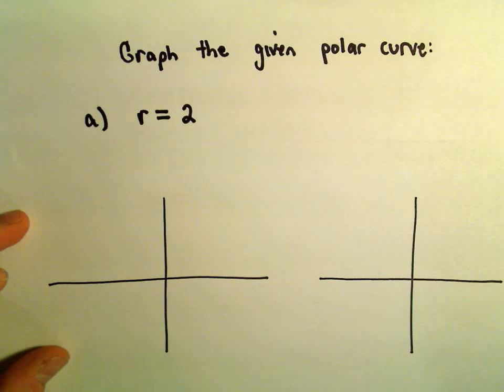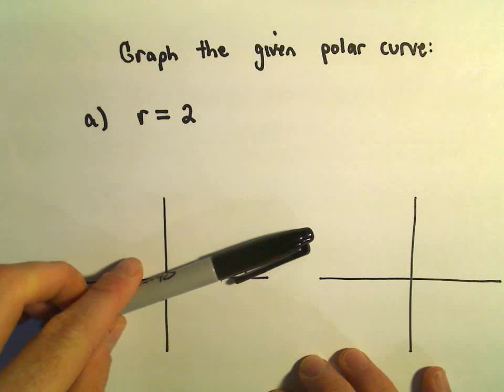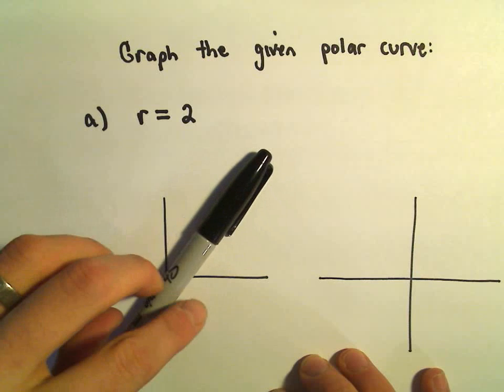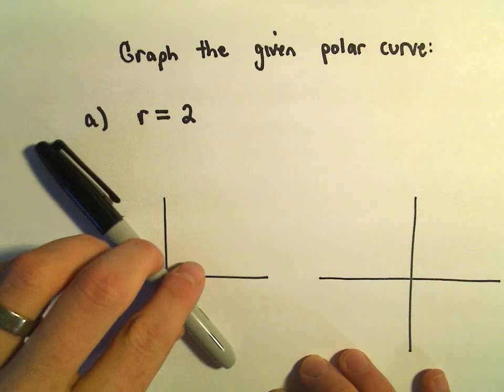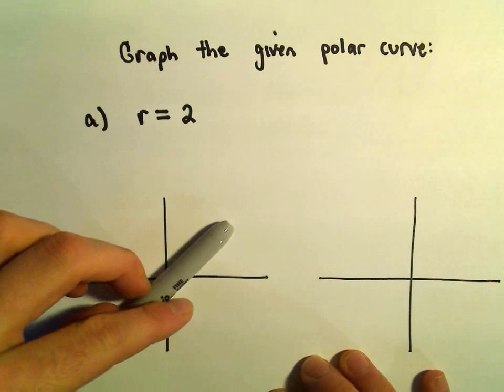Just to graph r equals 2, what that really says to me is it's kind of independent of the angle. So pick any angle that you want, just go out a distance of 2 from the origin.